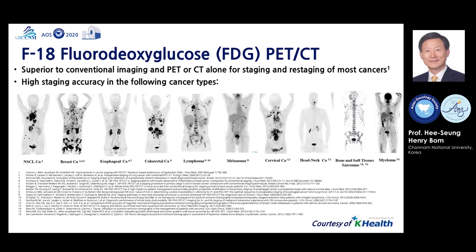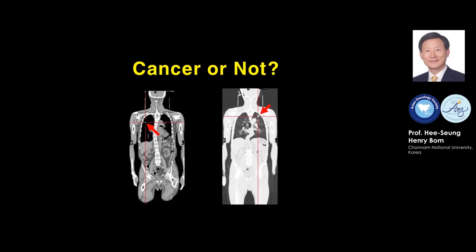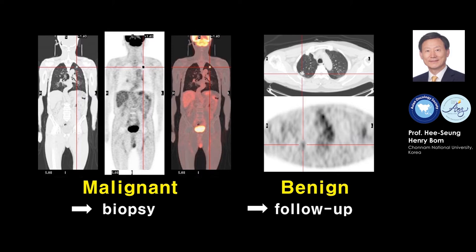Let me show some examples of staging by FDG PET-CT in lung cancer. It is not uncommon to find a small nodule in the lung, and it is not easy to say whether a small nodule is cancer or not. If a nodule shows positive uptake, the possibility of cancer is very high and we need histologic confirmation by biopsy. If there is no uptake in the nodule, we can observe and follow up. The strategy is simple: positive uptake — do biopsy; no uptake — follow up.